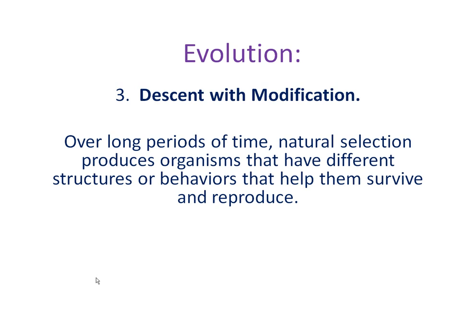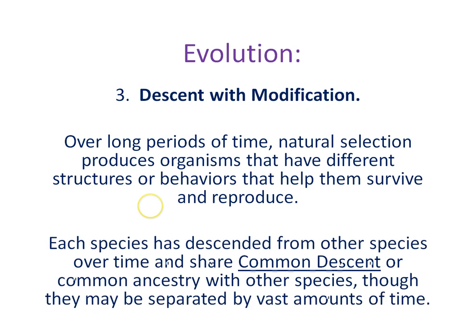All mammals basically have the same template for a digestive system — a tube with an in-hole and an out-hole — and modifications to that tube are the results of natural selection followed by evolution. That's why cows have an extra stomach: selection for a bulge in their digestive tube to hold symbiotic gut bacteria to break down cellulose. Each species has descended from other species over time and shares common descent with other species, separated by millions — if not tens to hundreds of millions — of years.